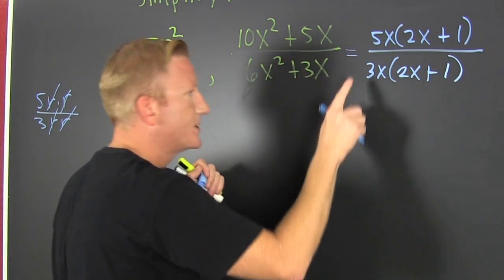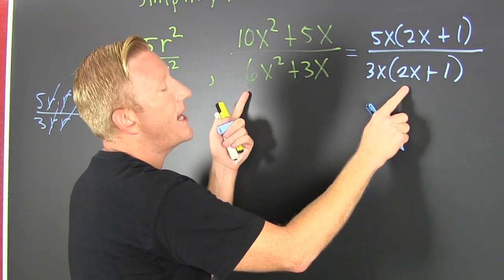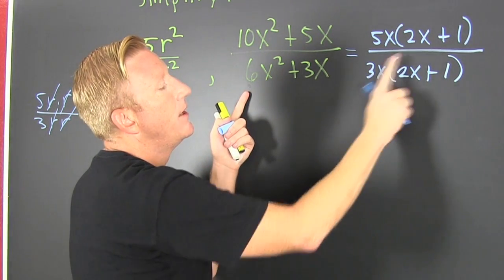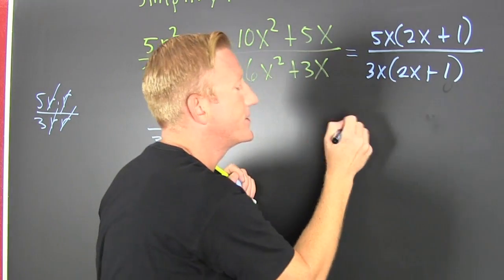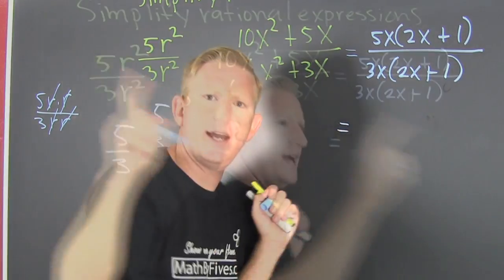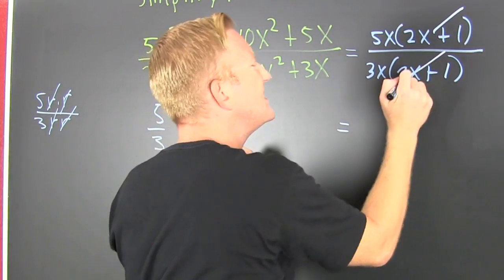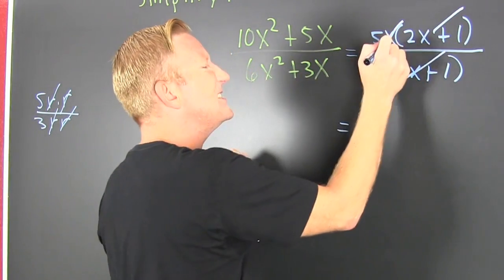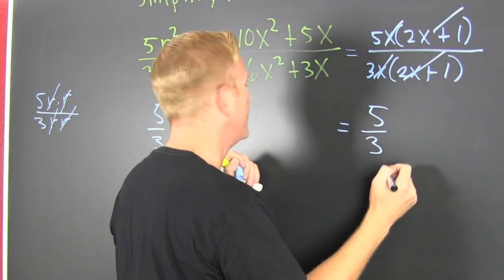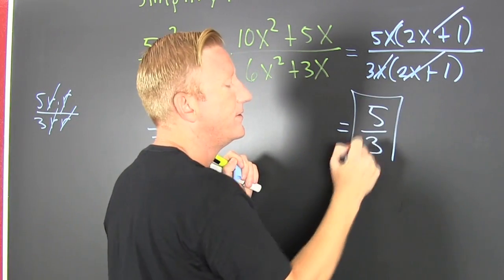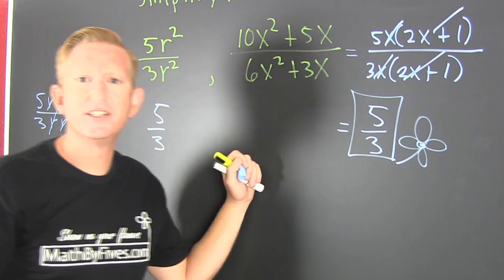Now notice — if I check, I get 6x squared plus 3x. Now I reduce like I did over there. I divide, and the common factors cancel. All the answers are going to be... five thirds. Done.